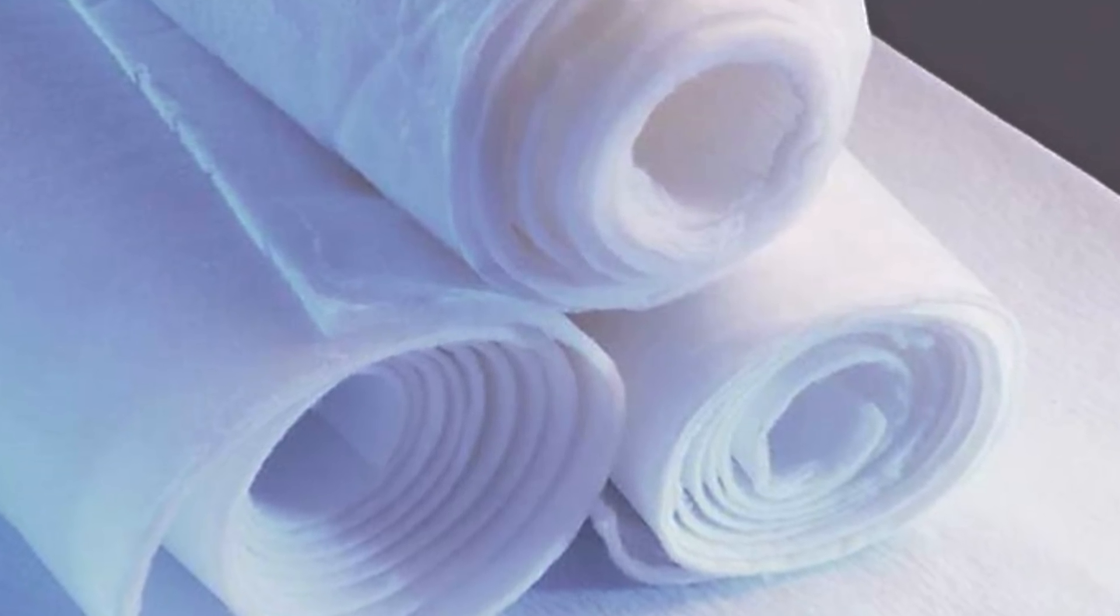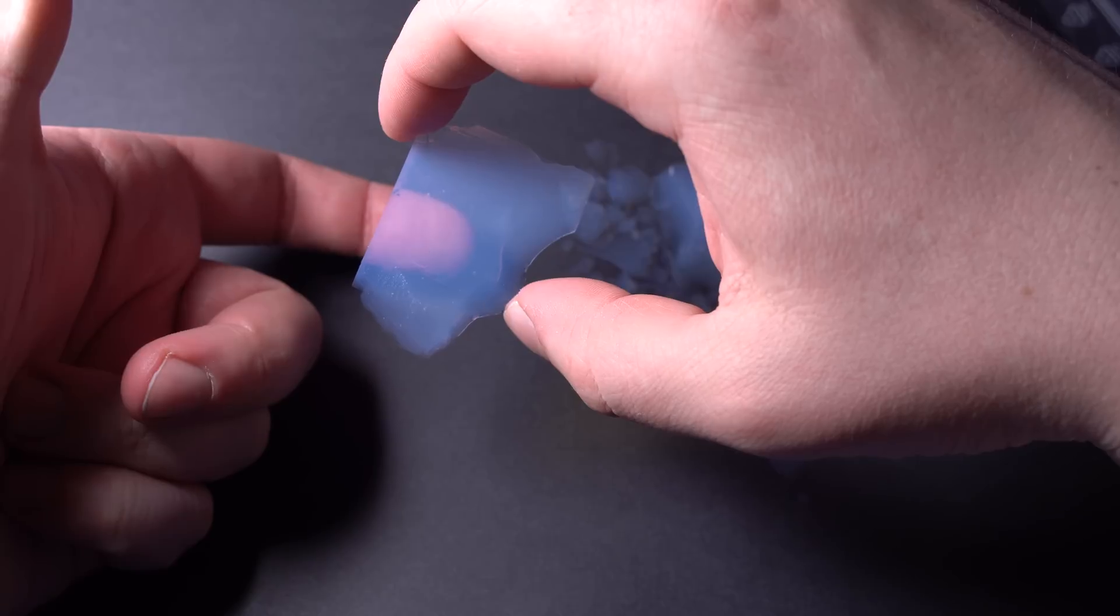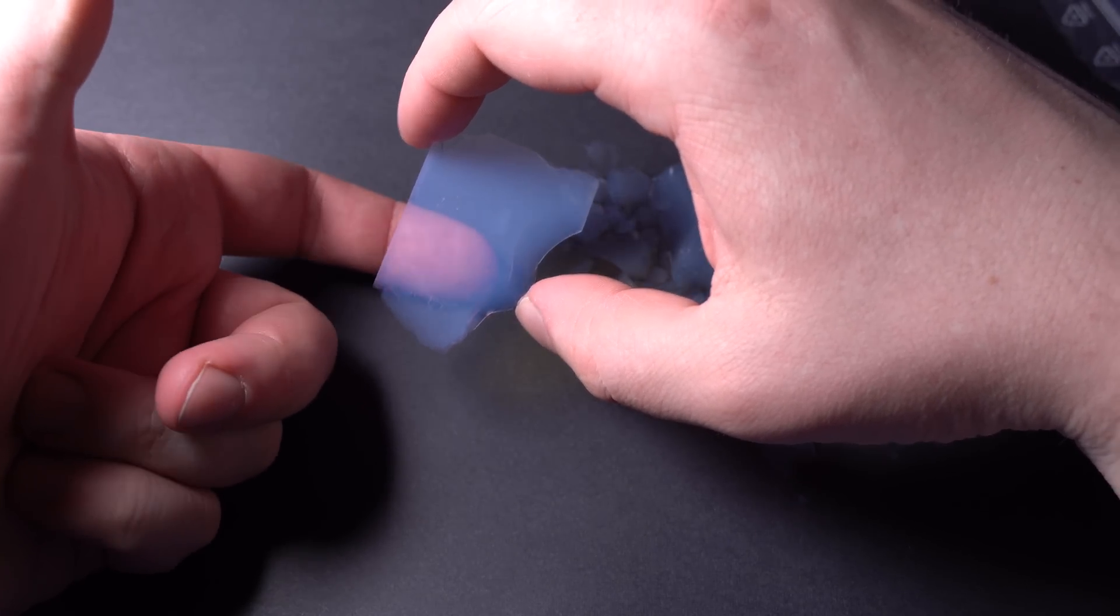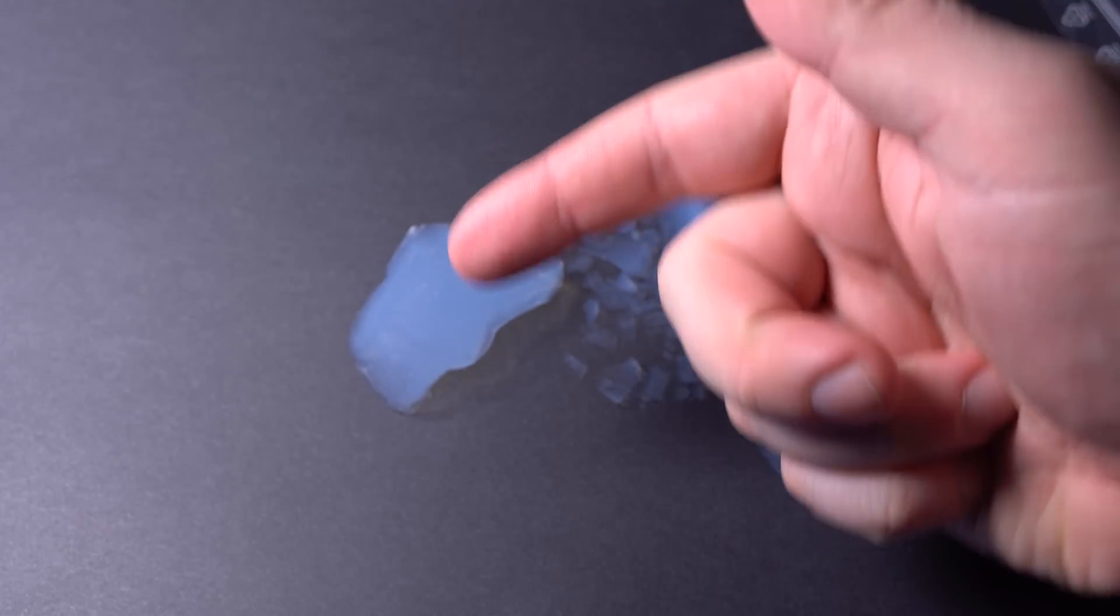Some companies have invented flexible aerogel, having mixed silica gel pieces with fibrous tissue. This material is widely used for insulating rooms and also for making modern warm and light clothes.